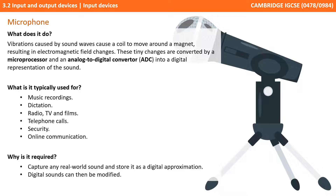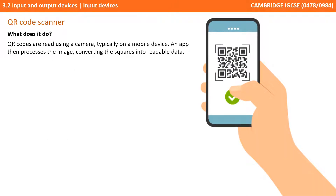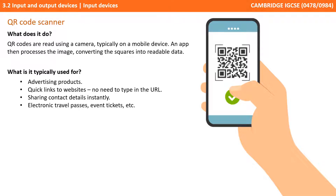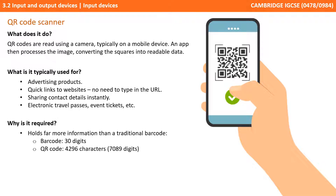Next up are QR code scanners. QR codes are read using a camera, typically embedded into a mobile device. An app then processes the image, converting the squares into readable data. They can be used for advertising products, providing quick links to websites without needing to type a URL, sharing contact details instantly, and providing access to electronic travel passes and event tickets. QR codes hold far more information than traditional barcodes — traditional barcodes can include up to 30 digits, whereas a QR code can encode up to 4,296 characters or over 7,000 digits.